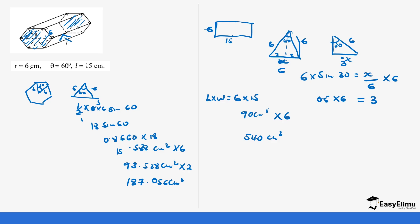So we've gotten the area of all the rectangular surfaces, and the area of the regular polygon on the upper and lower sides of the prism. Now we add the two areas together: 187.056 centimeters squared plus 540, which gives us 727.056 centimeters squared.